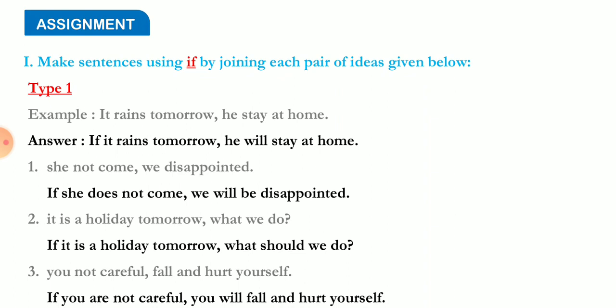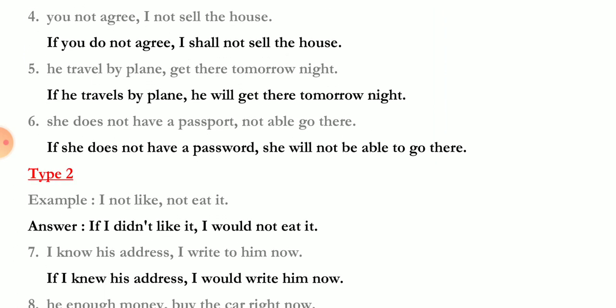More Type 1 examples: 'She not come / be disappointed' — answer: 'If she does not come, we will be disappointed.' 'It is a holiday tomorrow / what we do' — 'If it is a holiday tomorrow, what should we do?' 'You not careful / fall and hurt yourself' — 'If you are not careful, you will fall and hurt yourself.' 'You not agree / I shall not sell the house' — 'If you do not agree, I shall not sell the house.' The if-clause is in simple present and the main clause in future indefinite.